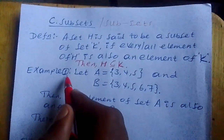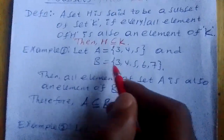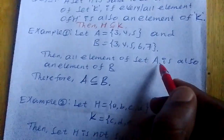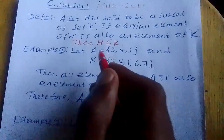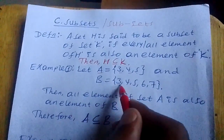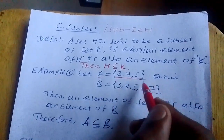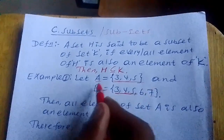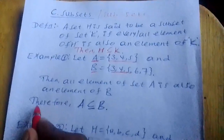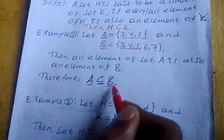Example one: Let set A equal to {3, 4, 5} and set B contains {3, 4, 5, 6, 7}. Then all elements of set A are also elements of B. So A is a subset of B.